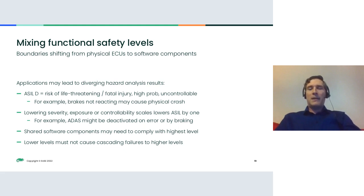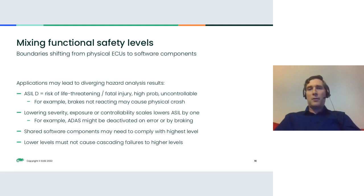ASIL D means there are hazards posing a risk of life-threatening or fatal injury with a high probability and no controllability otherwise — for example, if your ABS braking system experiences a failure and the brakes don't respond, potentially causing a crash. On the other hand, if controllability, exposure, or severity can be lowered by one level on the scale, you can drop one ASIL level. For example, a driver assistance system failure that the driver can detect and override by stepping on the brake would be ASIL A or B rather than ASIL D.